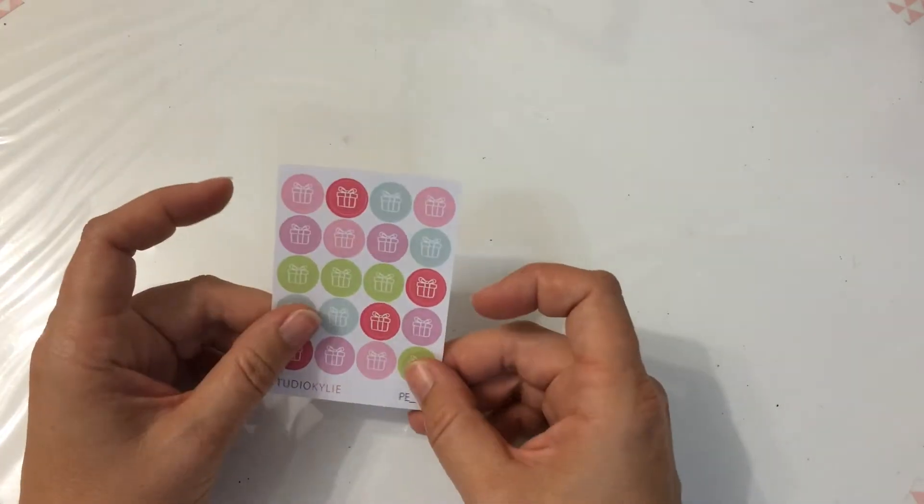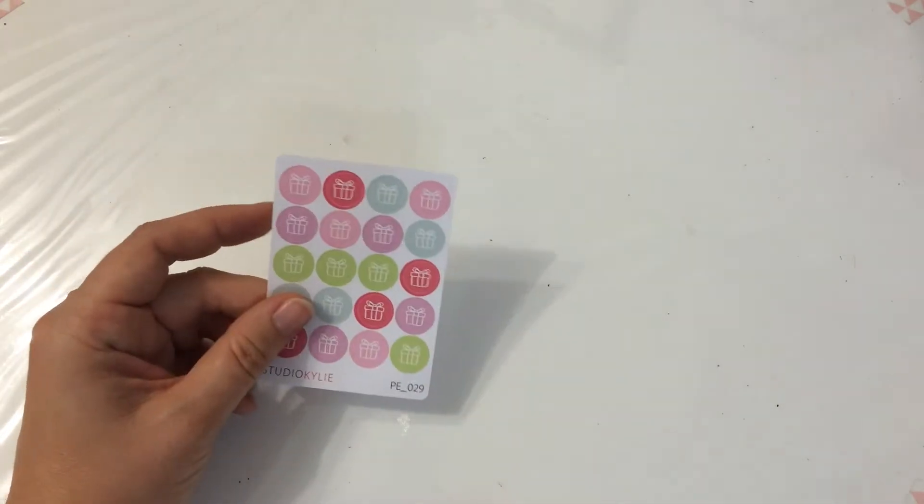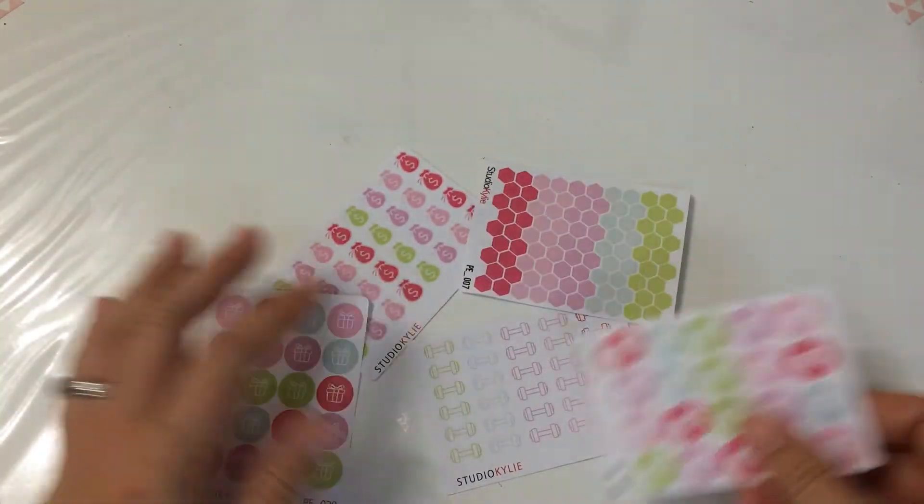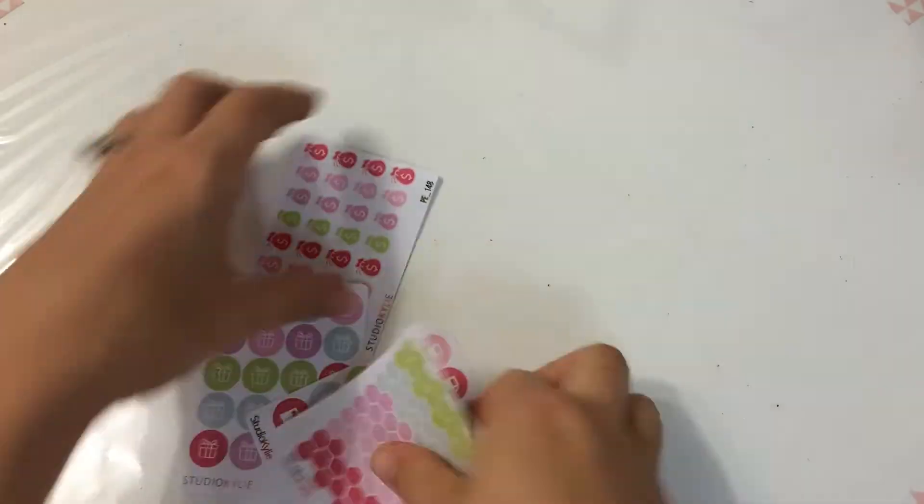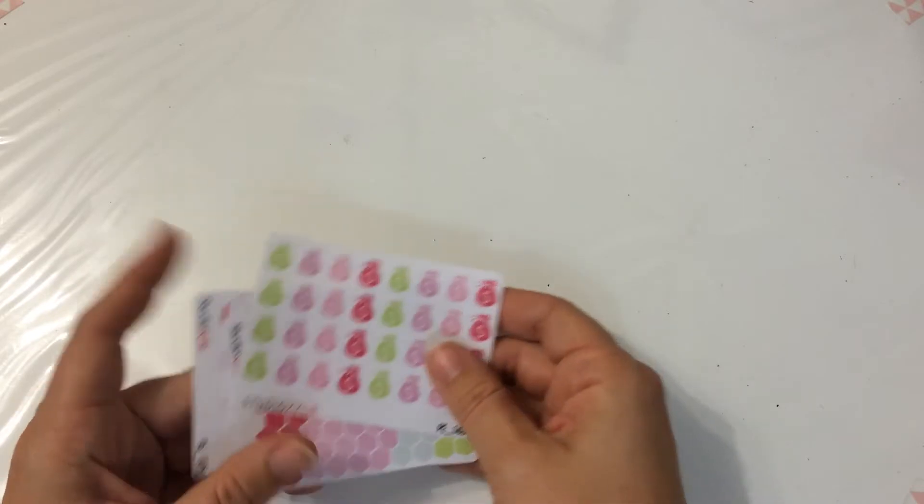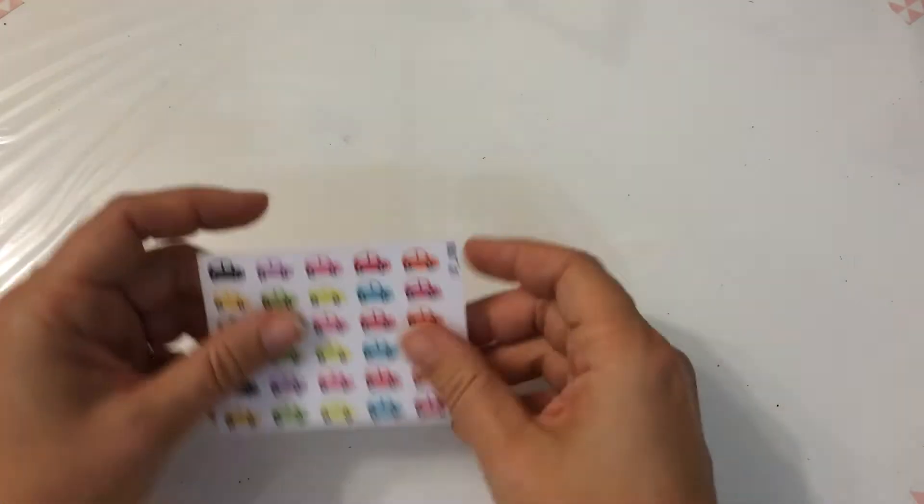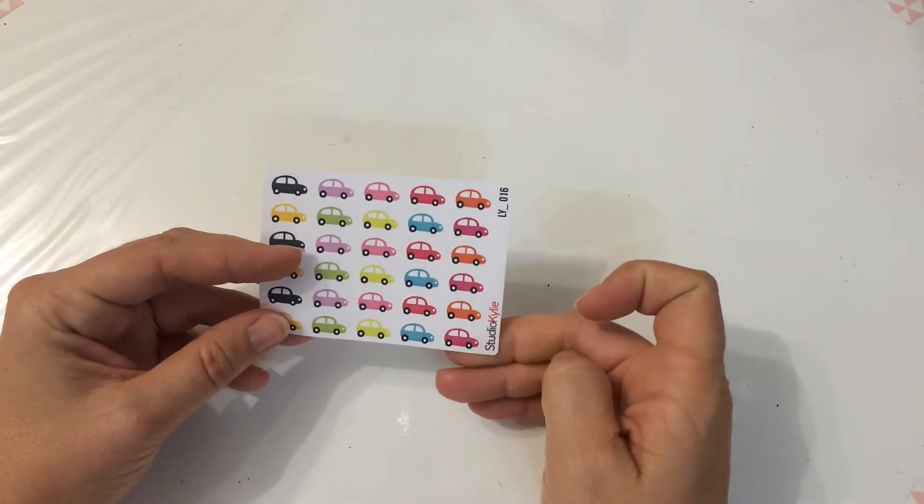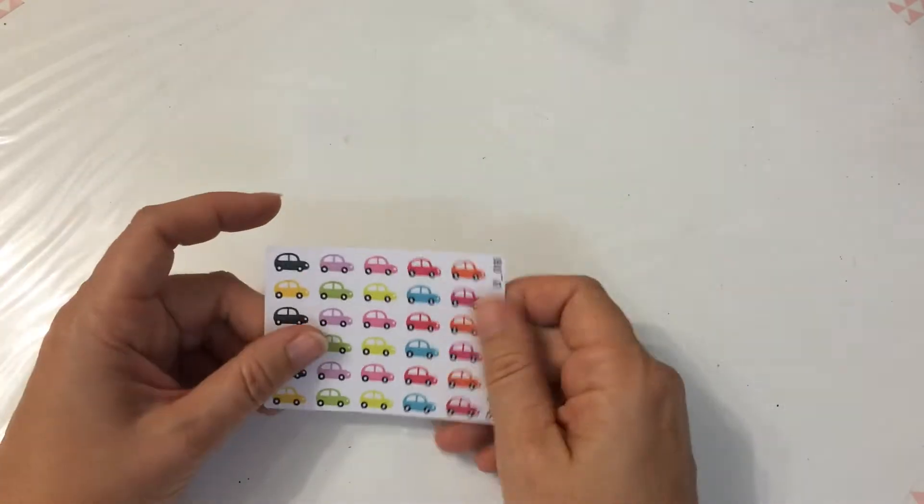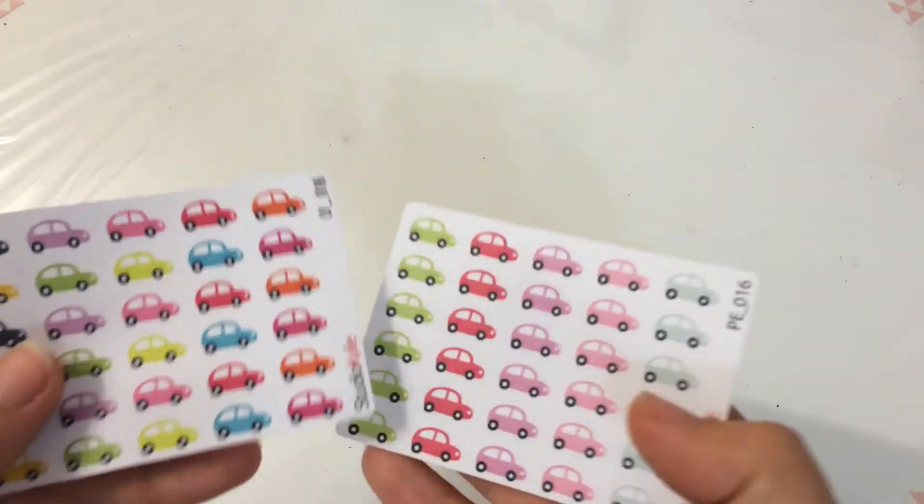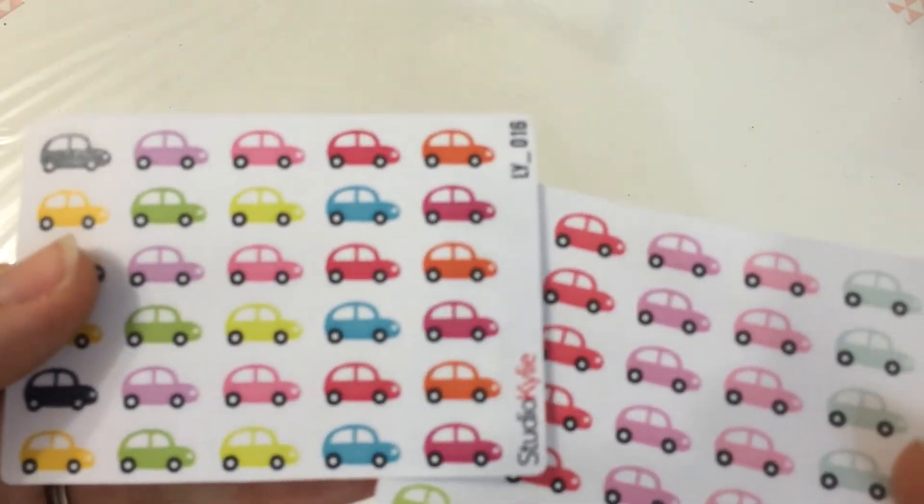Presents for birthdays. And she has different color schemes. You can see these are all from the same color scheme. I think they might be petal. Cars, which I will probably use for petrol or if we go on a trip somewhere. There's two different color schemes, like pastel and then more bright houses.